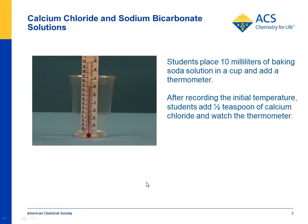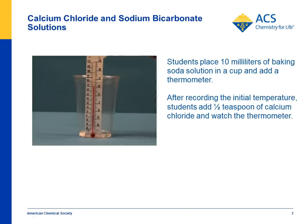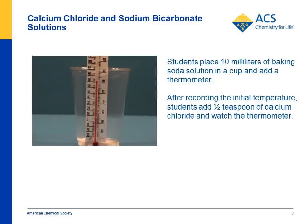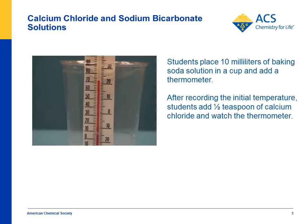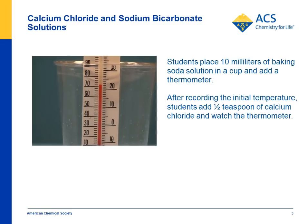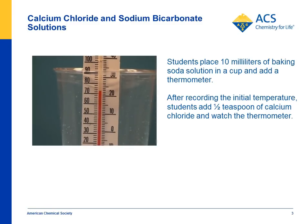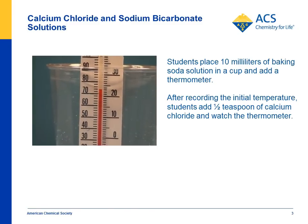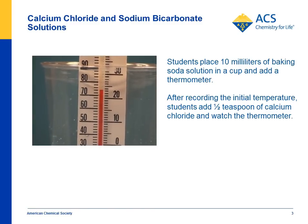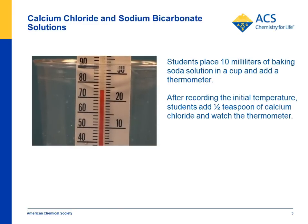Students do another reaction where they put 10 milliliters of a baking soda solution in a cup, put a thermometer in, and after recording the initial temperature, they add a half teaspoon of calcium chloride. They leave the thermometer in and watch it, and in this case there is an obvious temperature increase. So this reaction is exothermic.